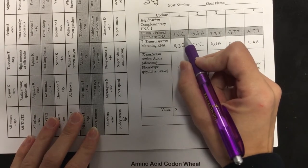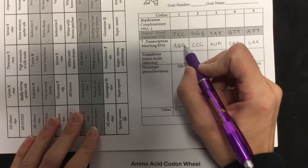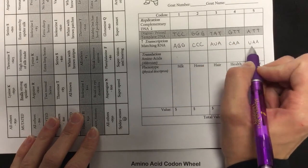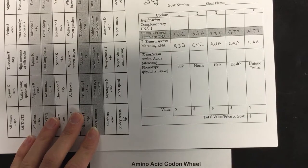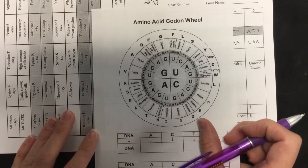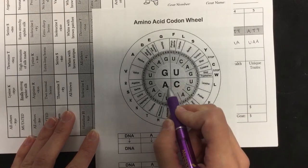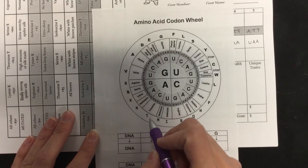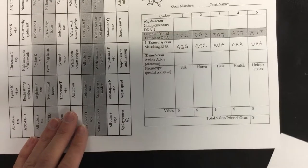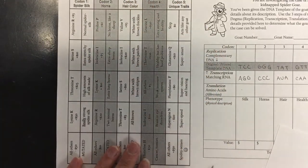All right, so you've got your TCC-AGG. You did that yesterday — you figured out what all the matching RNA is for your spider goat. Next step is to use your codon wheel that we just learned about today in notes to figure out what that mRNA is going to code for on our amino acids. And then based on those amino acids, we can look at this chart and figure out what they look like.